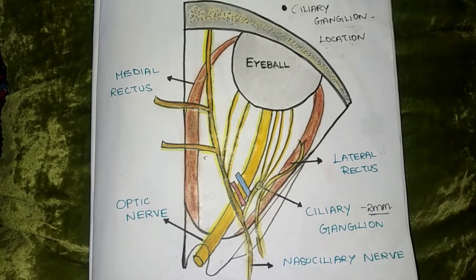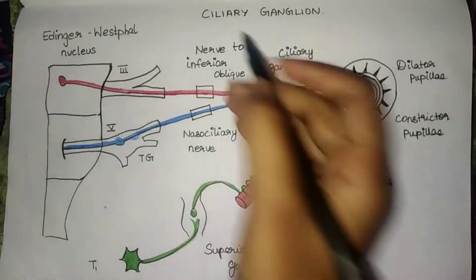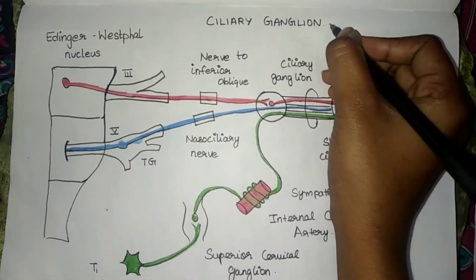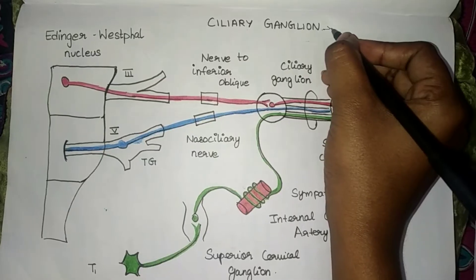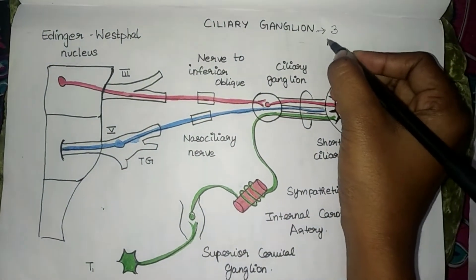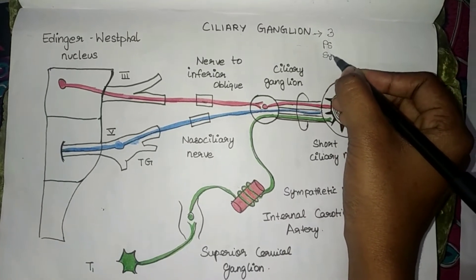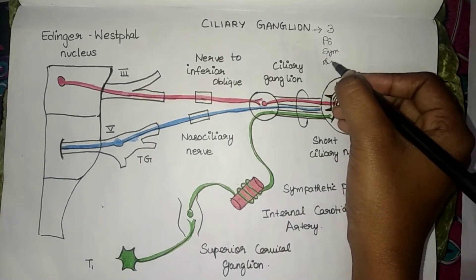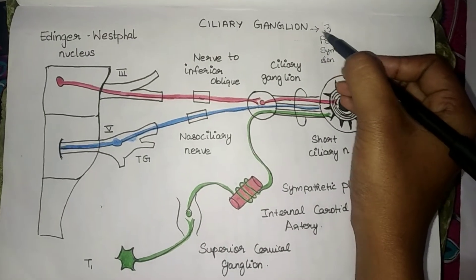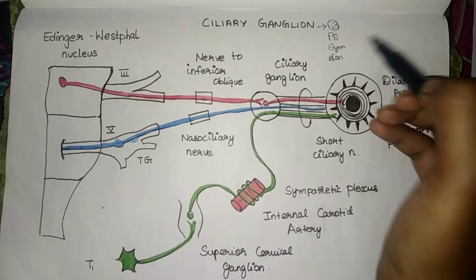Now we will see the roots of the ciliary ganglion. There are three roots: the parasympathetic root, the sympathetic root, and the sensory root.